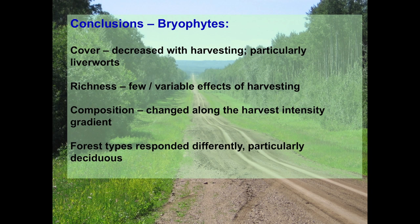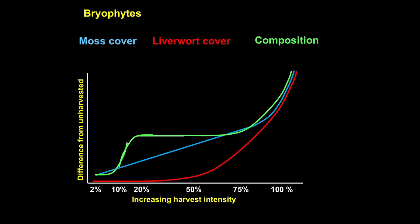For bryophytes — the same kind of story but in the opposite direction: they decreased with harvesting, particularly liverworts. There were few and variable effects in terms of richness. Composition changed along the harvesting intensity gradient. Forest types responded differently, particularly the deciduous and more particularly the conifer dominated forest, which has the greatest abundance and richness of bryophytes. Moss cover dropped from the unharvested to the 75% and then had a more linear decline. Liverworts dropped really dramatically with any level of forest harvesting. This provides insight into what different levels of harvesting might be doing in terms of composition, richness, and abundance, which we can use to figure out what the options might be going forward.